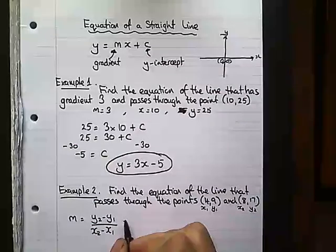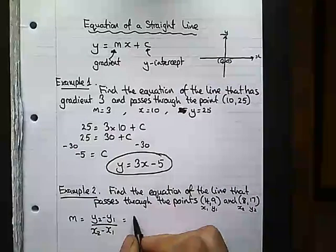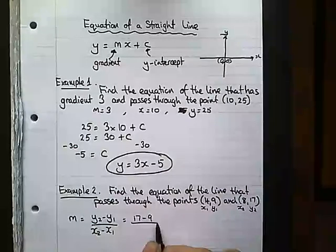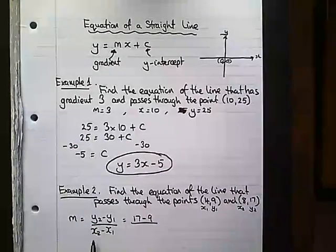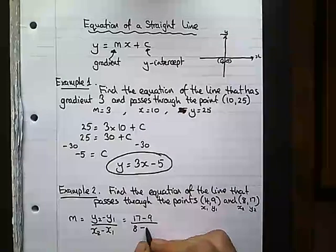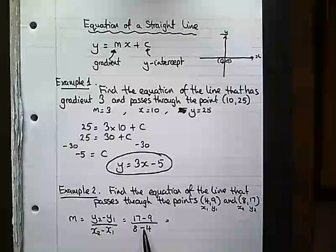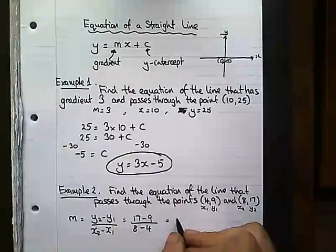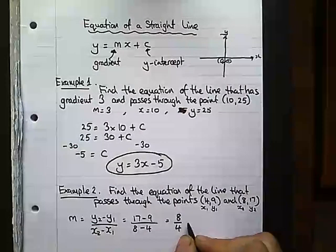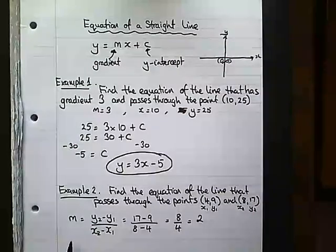So y2 equals 17, y1 equals 9, x2 equals 8, x1 equals 4. 17 minus 9 is 8 and 8 minus 4 is 4. 8 divided by 4 is 2. So I've now got my gradient.